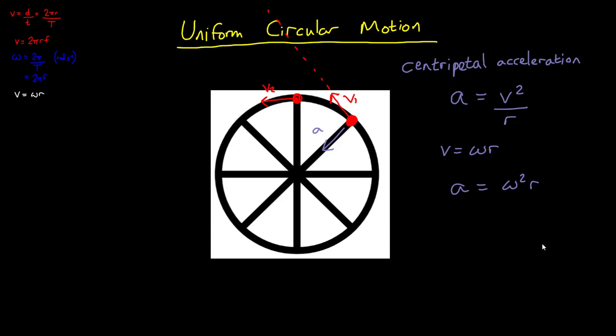According to Newton's second law, if we have an acceleration, we must have a resultant force. The resultant force that causes a centripetal acceleration is called a centripetal force. Since f equals ma from Newton's second law, centripetal force f must equal mv squared divided by r or m omega squared multiplied by r.